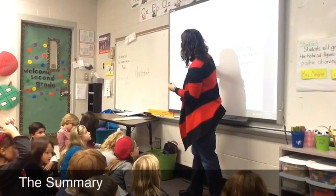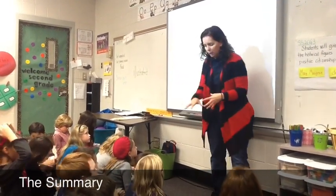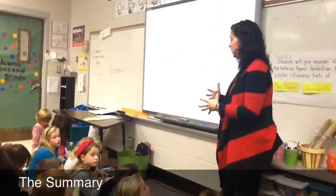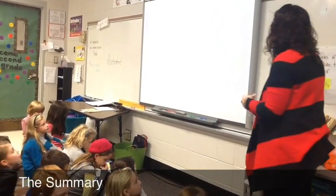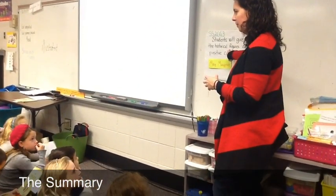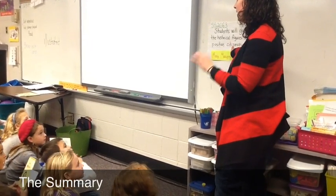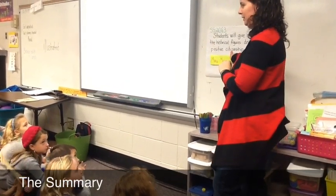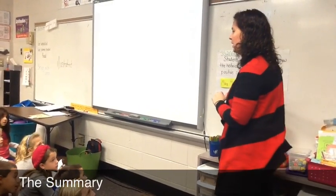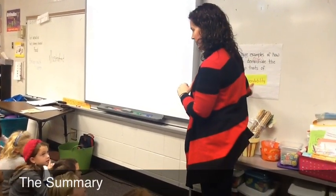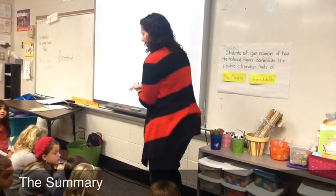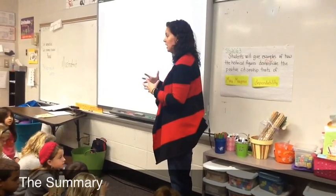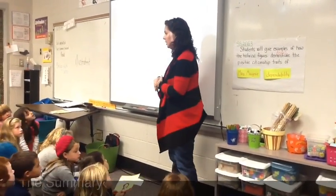So we have found several ways from the text that Mary Musgrove was dependable. Our historical figure was Mary Musgrove, her positive citizenship trait was dependability, and we did find examples of how she was dependable. Now close your book — I have an activity for you that's going to show me whether or not you understand how Mary Musgrove demonstrated dependability.